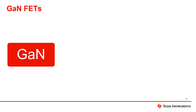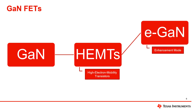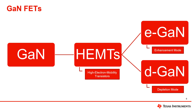Nowadays, the major commercial GaNFETs are HEMTs, which stands for Lateral High Electron Mobility Transistors. These GaN switching devices come in two different types: EGAN, which stands for Enhancement Mode, and DGAN, which stands for Depletion Mode.